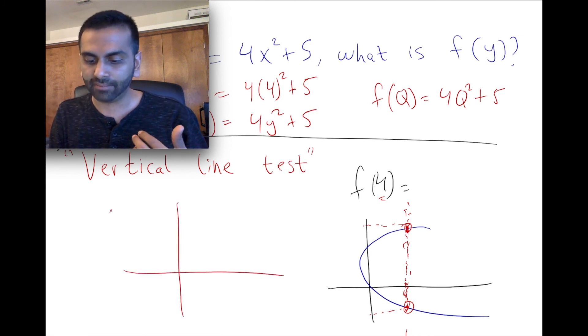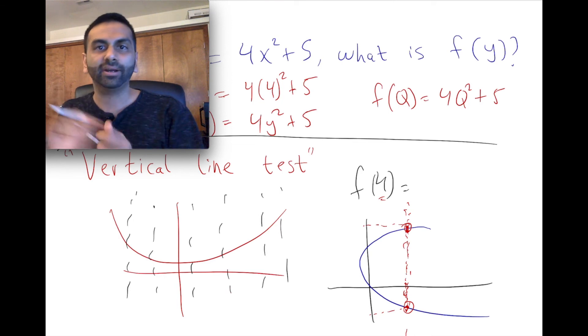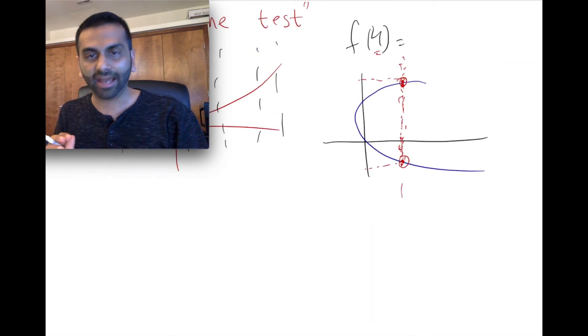A parabola, on the other hand, is a function because again, as you go through it, it's like, oh, yeah, there's no vertical line where it hits it twice.